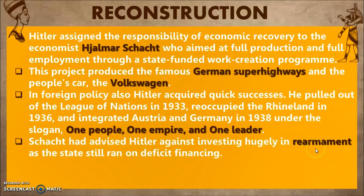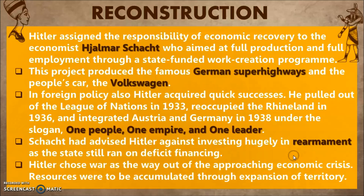Schacht had advised Hitler against investing hugely in rearmament — the process of rebuilding the army. If you remember from the Treaty of Versailles, army size had been restricted. But Hitler wanted to grow his empire and believed that to develop the country and get out of the economic crisis, they needed to acquire territory and resources through expansion. Despite Schacht's disagreement, Hitler pursued rearmament and eventually removed Schacht from the economic reconstruction program.